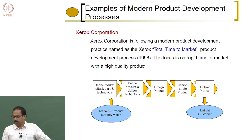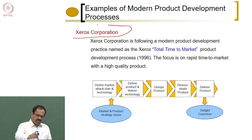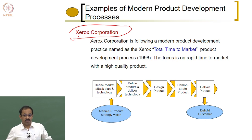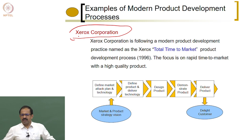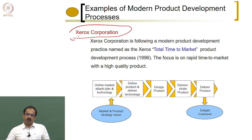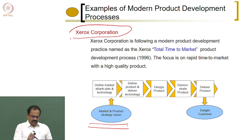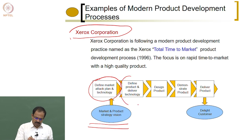Let us see how some companies actually develop products. This shows the product development process of Xerox Corporation, which makes photocopying machines. Xerox has become synonymous with photocopy — they are very highly successful in developing products for photocopy. How do they actually develop the products? They start with a product vision.